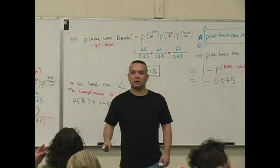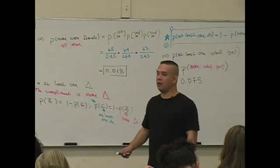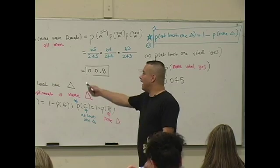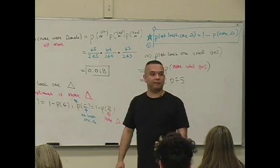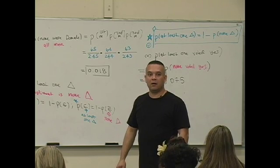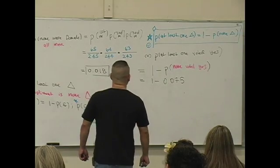You guys okay with this? I gave it to you in bite-sized pieces so that you didn't choke on it. Meaning, I asked you A already and I already knew you were going to use it in C. You guys okay with this? So, what's one minus 0.05?